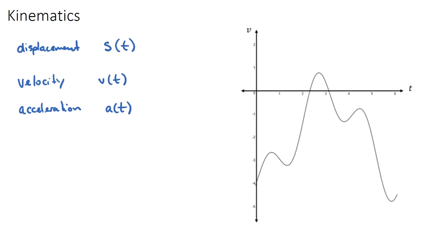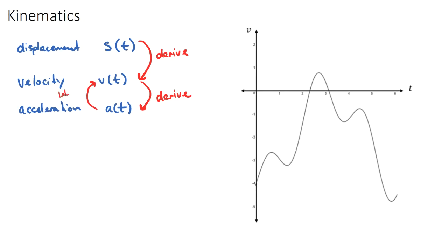When working with these three functions, if we're given the displacement function and want the velocity function, we need to differentiate. The derivative of displacement is velocity, and the derivative of velocity is acceleration. To go the other way — for example, from acceleration to velocity — we integrate. Likewise, to go from velocity to displacement, we integrate.